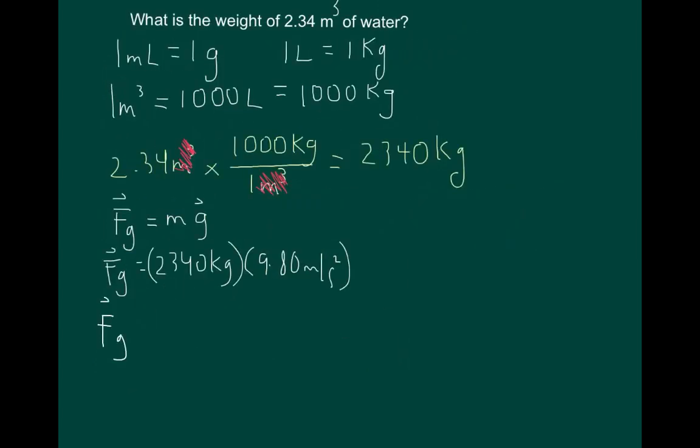So Fg, also known as weight, equals 22,932 newtons. If we look at the number we were given, it's only 3 sig digs. So our final answer can only go to 3 sig digs, or significant digits. So the weight of 2.34 cubic meters of water is 22,900 newtons.